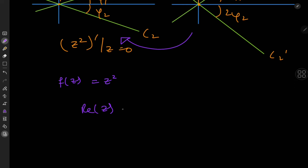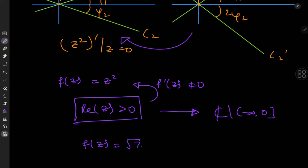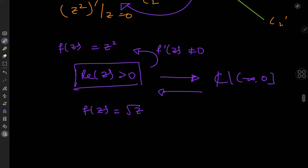Then this function maps conformally the half plane Re z being positive to the slit plane c excluding negative infinity to zero. We see that on this set the derivative of f of z is non-zero and the inverse mapping f of z equal to the square root of z does the perfect job of conformally mapping the slit plane onto this half plane.